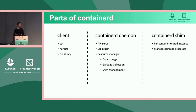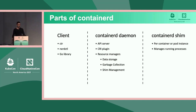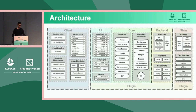In the ContainerD daemon, which you're probably all familiar with running on your hosts, we have our API server, the CRI plugin, and then all our resource managers that do data storage, garbage collection, and everything around shim management, which actually owns the containers. The actual ContainerD shim is per container or pod instance, and this is what actually manages all the running processes.